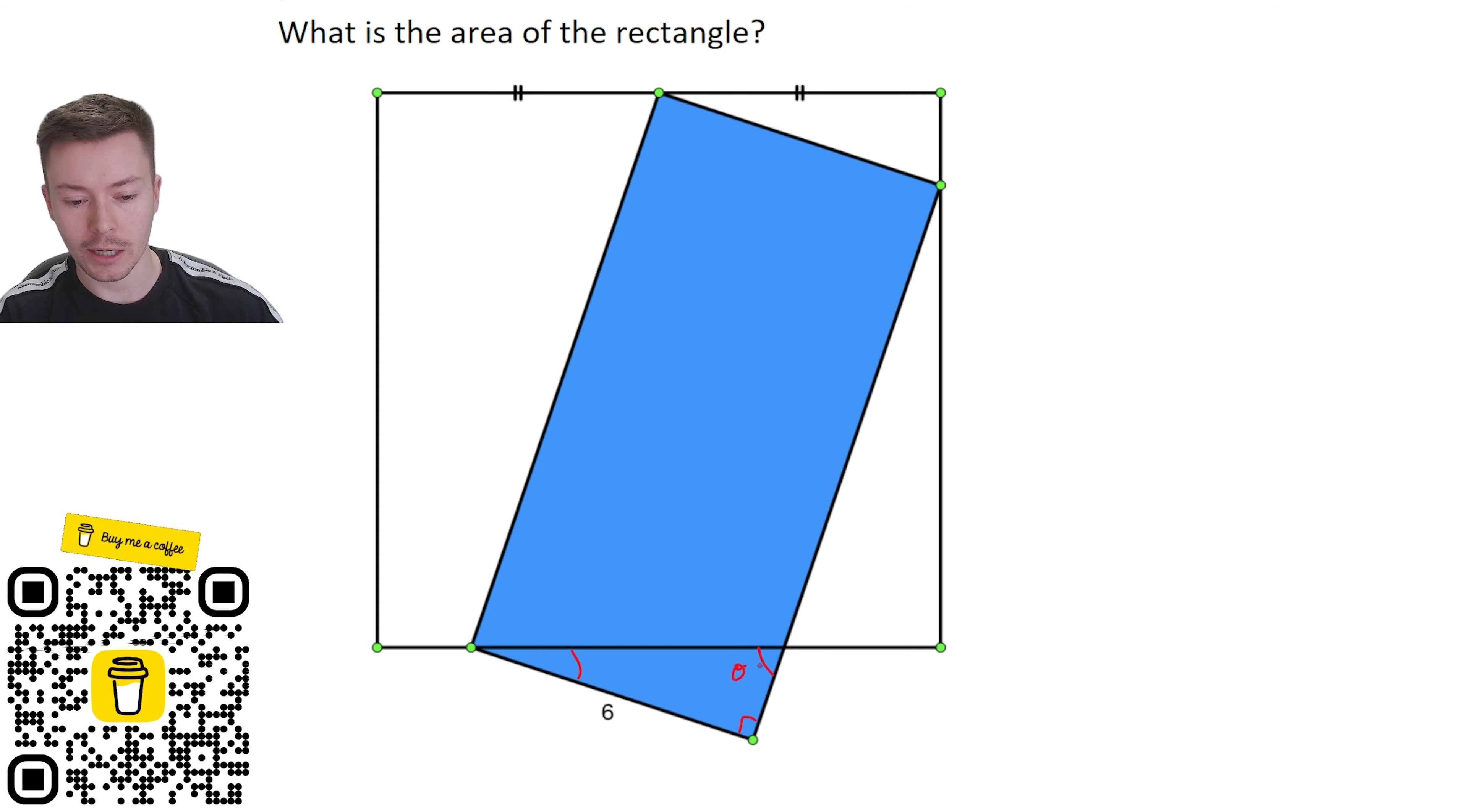Now I've labeled this side down here theta, which means the other angle in that triangle must be 90 minus theta because there's 180 degrees in a triangle. 180 minus 90 degrees for the right angle leaves us with 90 take away theta, which is going to leave us with 90 minus theta.